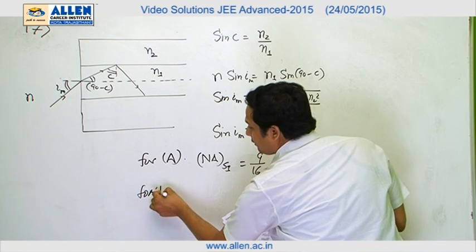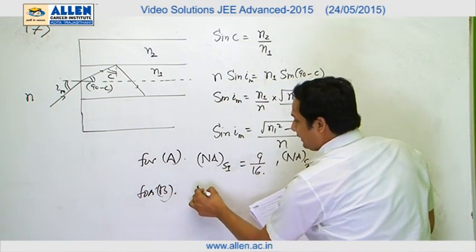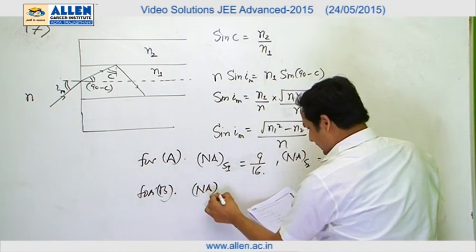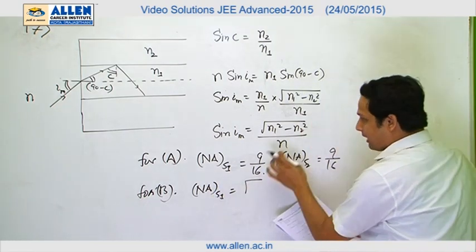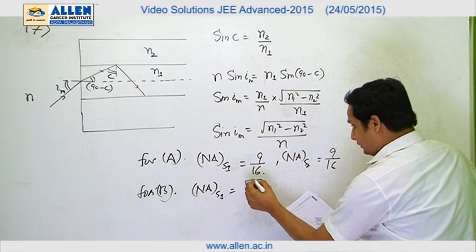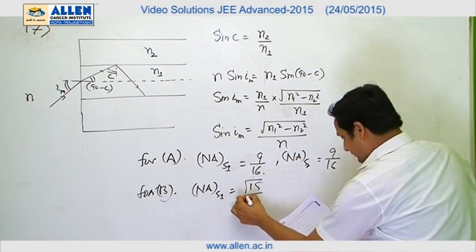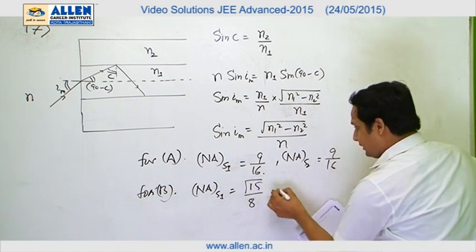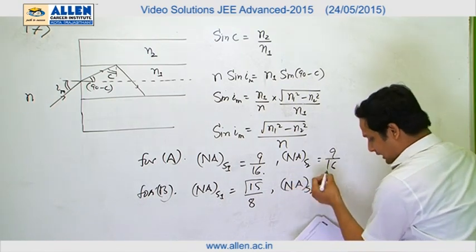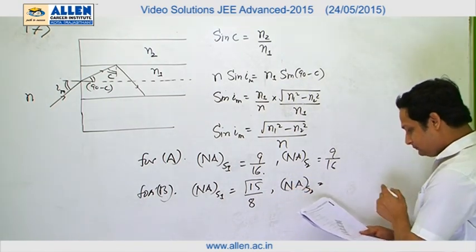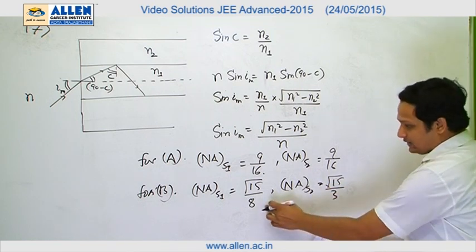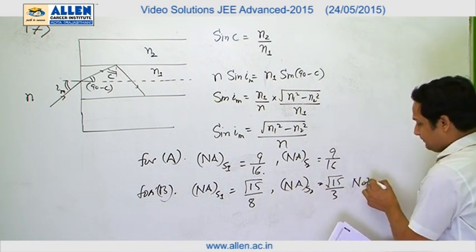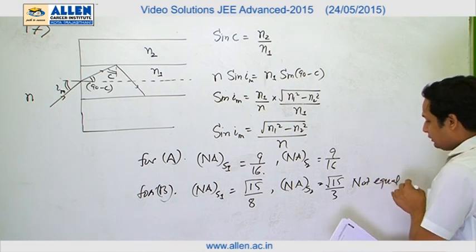For option B, NA for S1 comes out to be √15/8 after solving and putting the values. And NA for S2 comes out to be √15/3. So they are not equal. This is not the correct option.